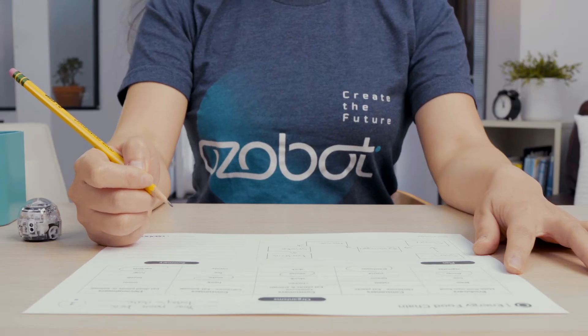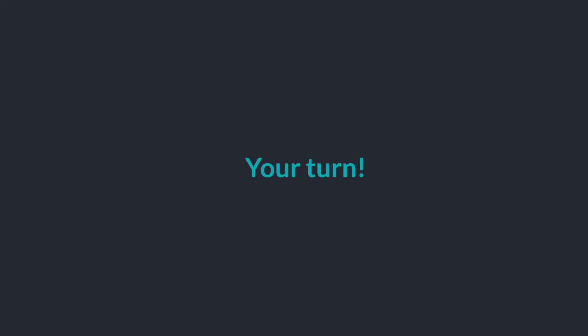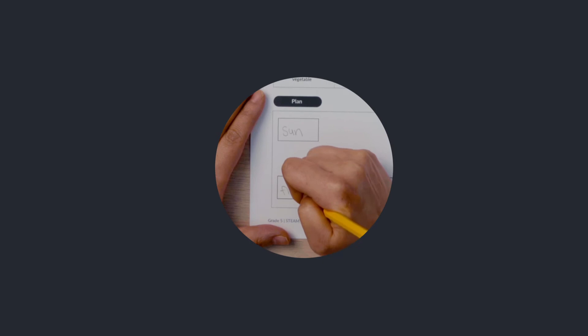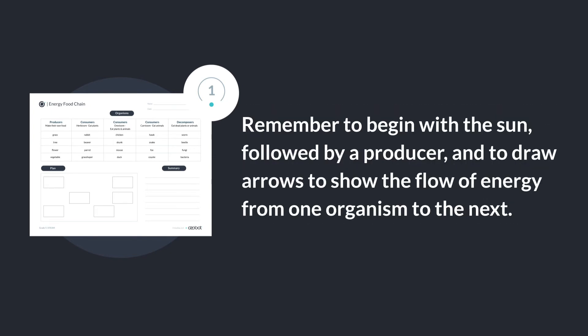You can choose to sequence the boxes differently as long as your food chain is in the correct order. Can you make a plan to show the sequence of your food chain? Remember to begin with the sun followed by a producer and to draw arrows to show the flow of energy from one organism to the next.